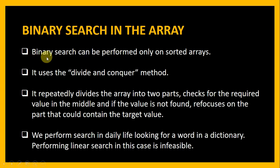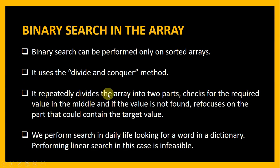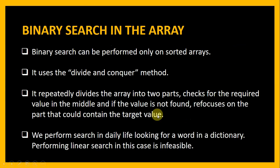Now let us see what binary search is. Binary search can be performed only on a sorted array — this is a prerequisite condition. If the array is not sorted, we need to sort it before performing binary search. It uses the divide and conquer method: it repeatedly divides the array into two parts, checks for the required value in the middle, and if the value is not found, refocuses on the part that could contain the target value — either the upper or the lower part. We also perform binary search in daily life, such as when looking for a word in a dictionary, where linear search would be far too slow.